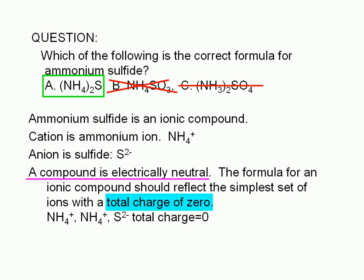so the correct answer must be choice A. Let's verify this. A compound is electrically neutral. The formula for an ionic compound should reflect the simplest set of ions with a total charge of 0. The subscript for ammonium is 2, and the subscript for sulfide is not written. That means it's implied to be 1.